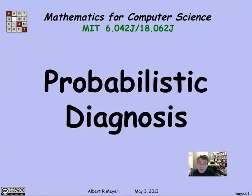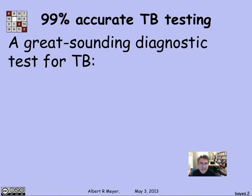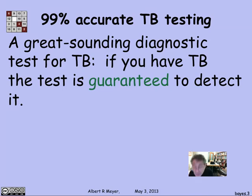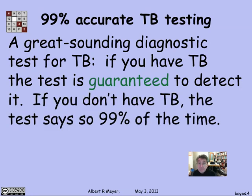One of the most important applications of conditional probability is in analyzing the results of diagnostic tests of uncertain reliability. Suppose I have a diagnostic test for tuberculosis that's more than 99% accurate. If you have TB, this test is guaranteed to detect it and say you have TB. If you don't have TB, 99% of the time the test correctly says you don't have TB, and 1% of the time it gets it wrong.